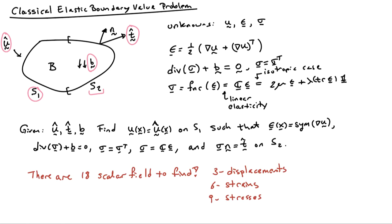And if you count it all up, there are 18 scalar fields to find. There are three displacements, u1, u2, and u3. There are six strains, the three normal strains and the three shear strains, and there are nine stresses to be found.